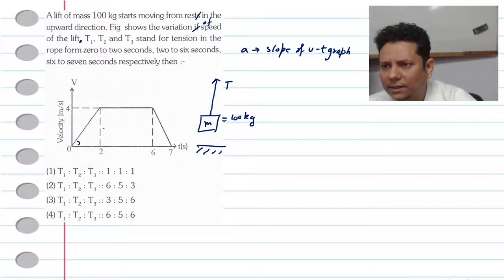Your acceleration will be tan theta, which is 4 over 2, so acceleration will be plus 2 meters per second squared. If you see the axis, this unit is meters per second and this is per second, so time is in seconds, making it meters per second squared.